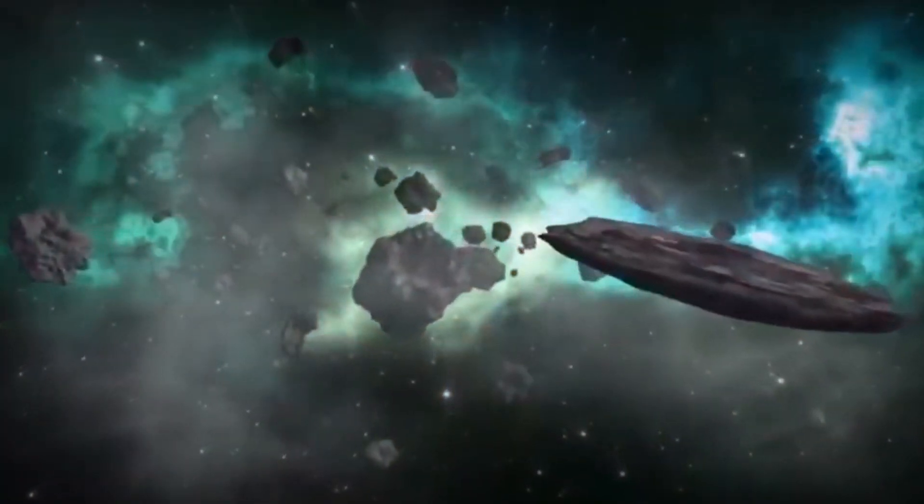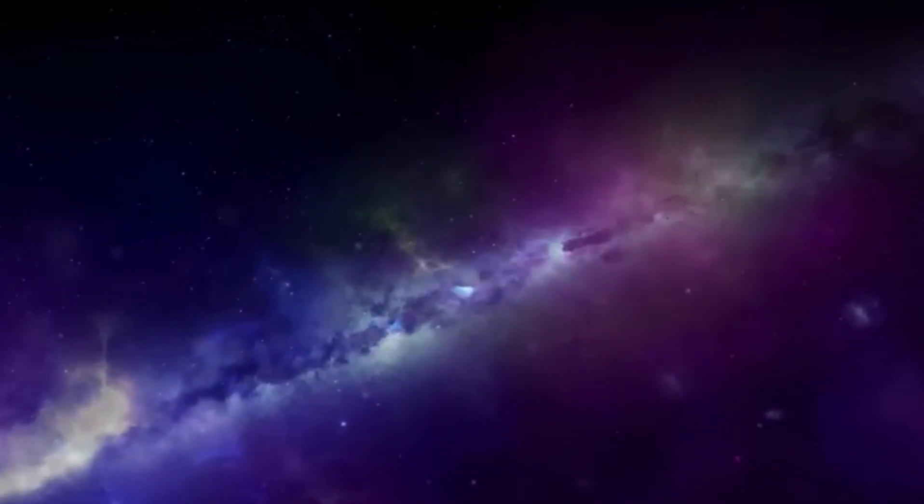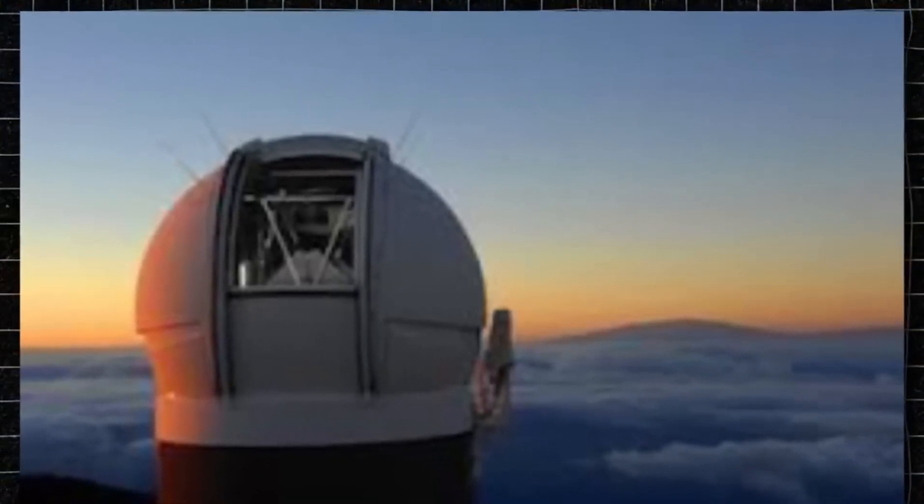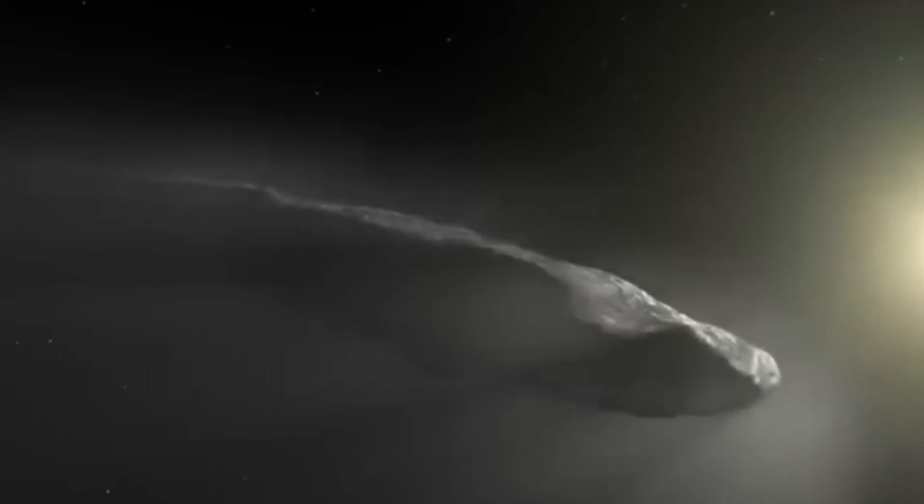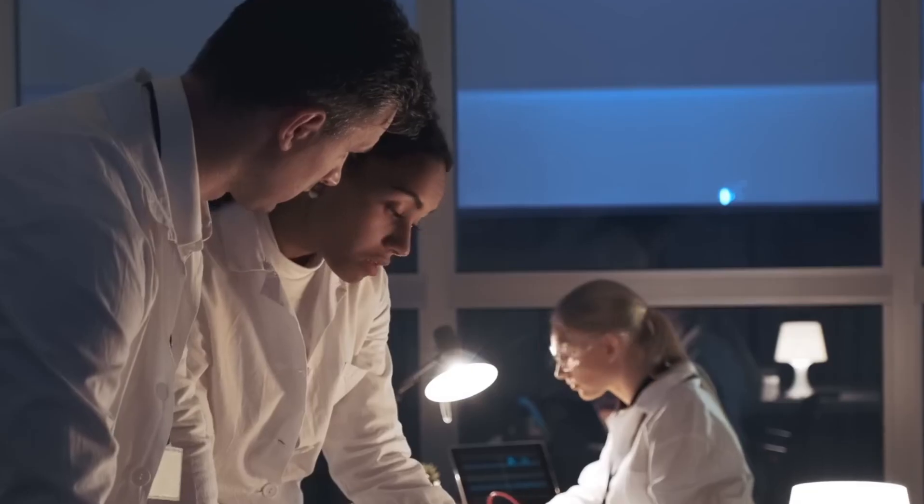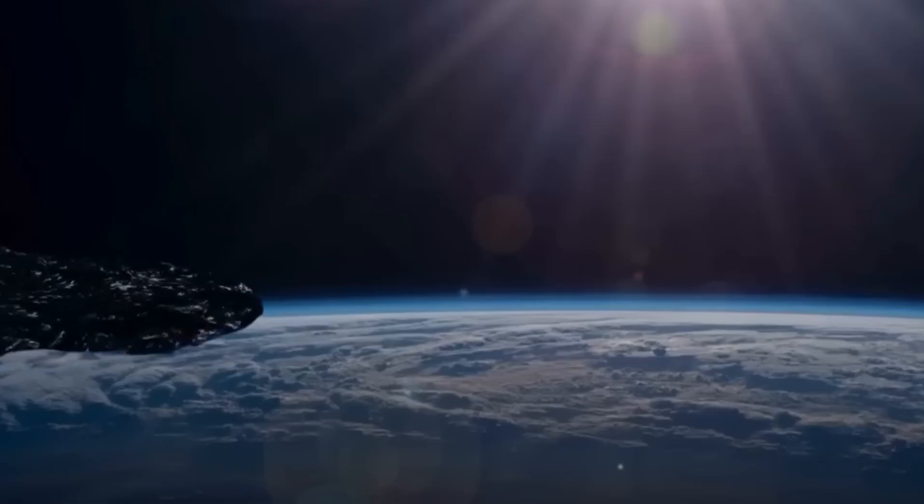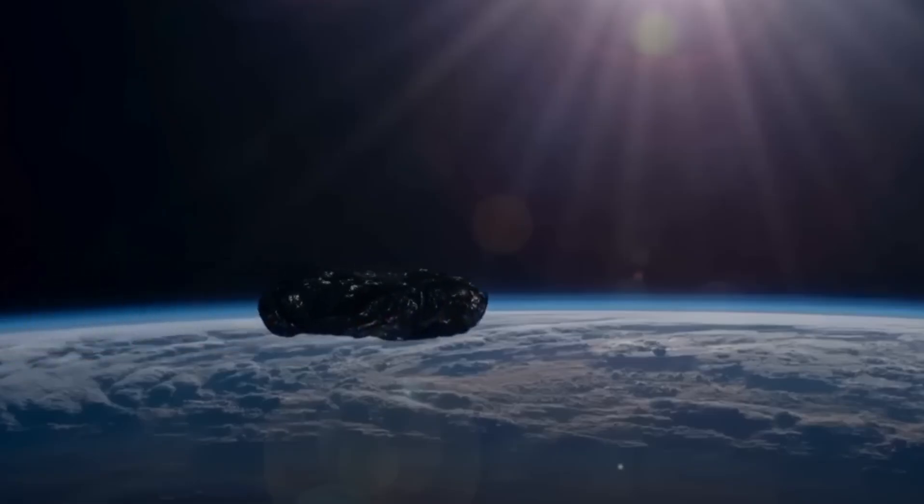Since its launch and deployment, the James Webb Space Telescope has made groundbreaking contributions to our understanding of the universe. Positioned nearly a million miles from Earth, JWST operates in an orbit around the sun, allowing it to observe celestial phenomena 24-7.